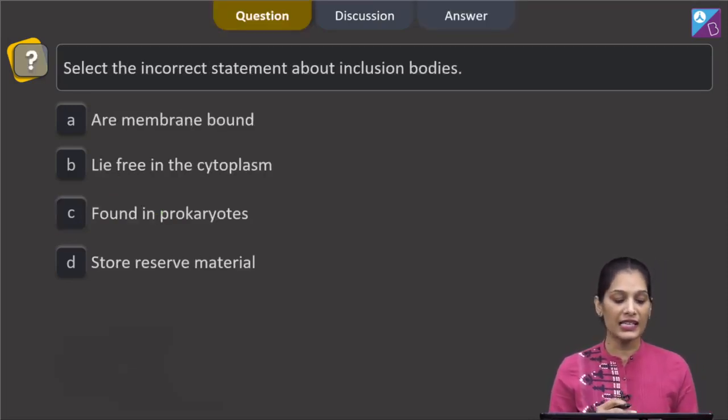This question says select the incorrect statement about inclusion bodies. The inclusion bodies are the bodies which can be seen in the prokaryotes to store the reserve food material. They freely lie in the cytoplasm, they are not membrane bound.